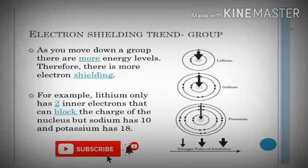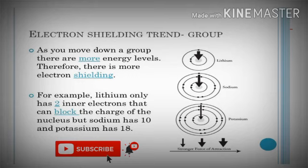See the diagram. These are the first group elements — lithium, sodium, and potassium. From top to bottom, the atomic number increases. With the increasing atomic number, the number of inner shells also increases from top to bottom. By the increasing of inner shells, the shielding effect also increases. So in groups, from top to bottom, the shielding effect will be more.